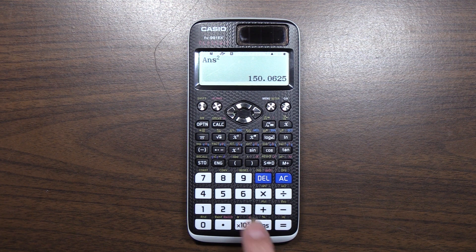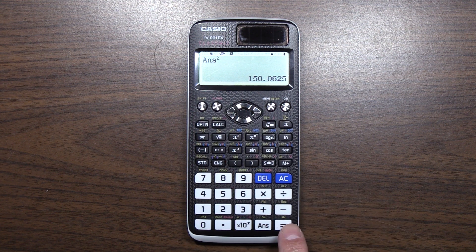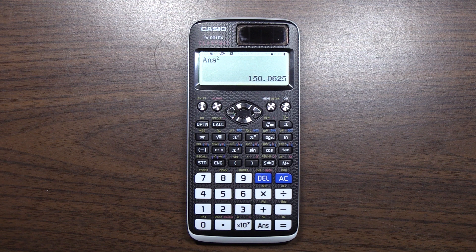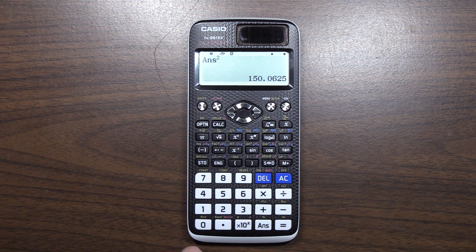It turns out when you use this shift and equal to do the approximately equal, it reruns the previous expression, which in this case was take the answer and square it.